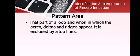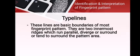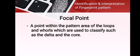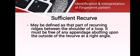Pattern area: that part of a loop and whorl in which the cores, deltas, and ridges appear, enclosed by type lines. Type lines are the basic boundaries of most fingerprint patterns — two innermost ridges which run parallel, diverge, or tend to surround the pattern area. Focal point: a point within the pattern area of loops and whorls used for classification, such as the delta and the core. Sufficient recurve: that part of a recurving ridge between the shoulders of a loop; it must be free of any appendage abutting upon the outside of the recurve at a right angle.